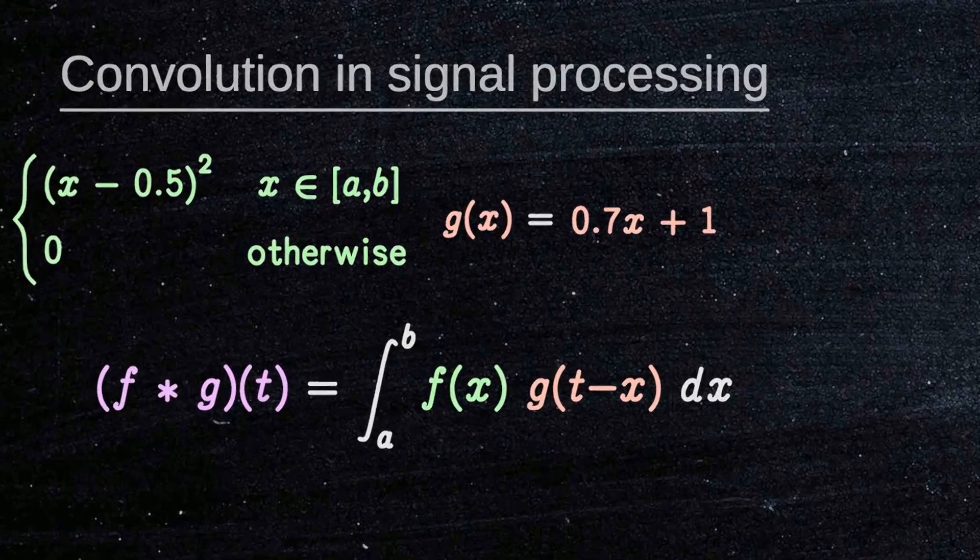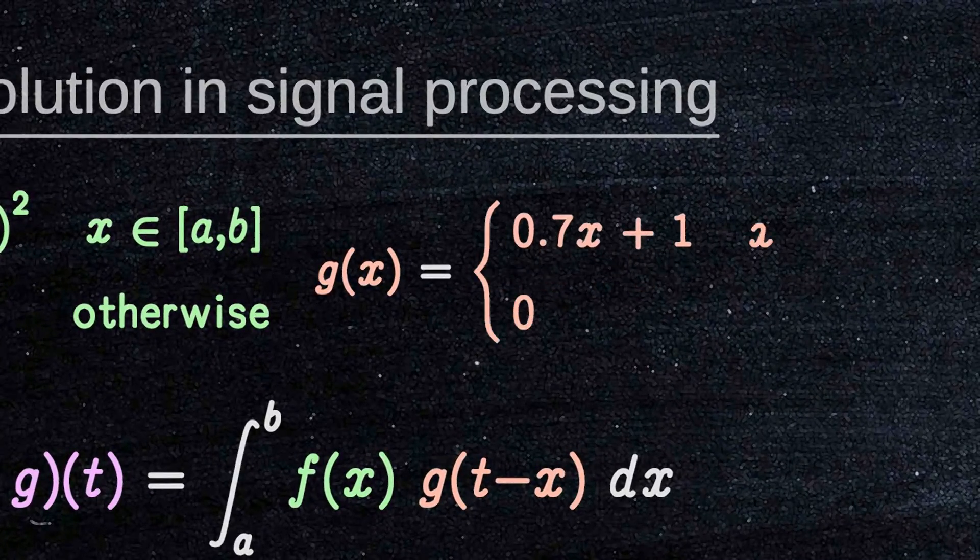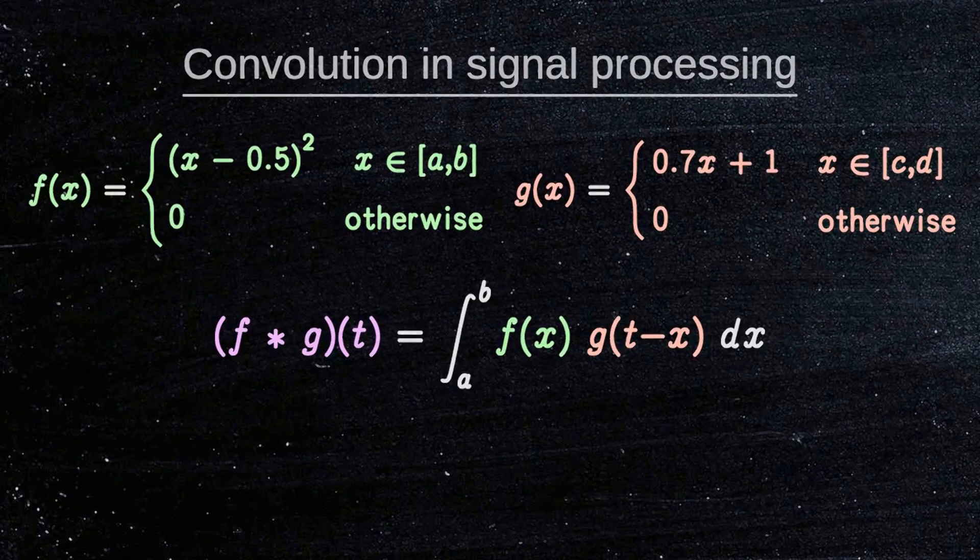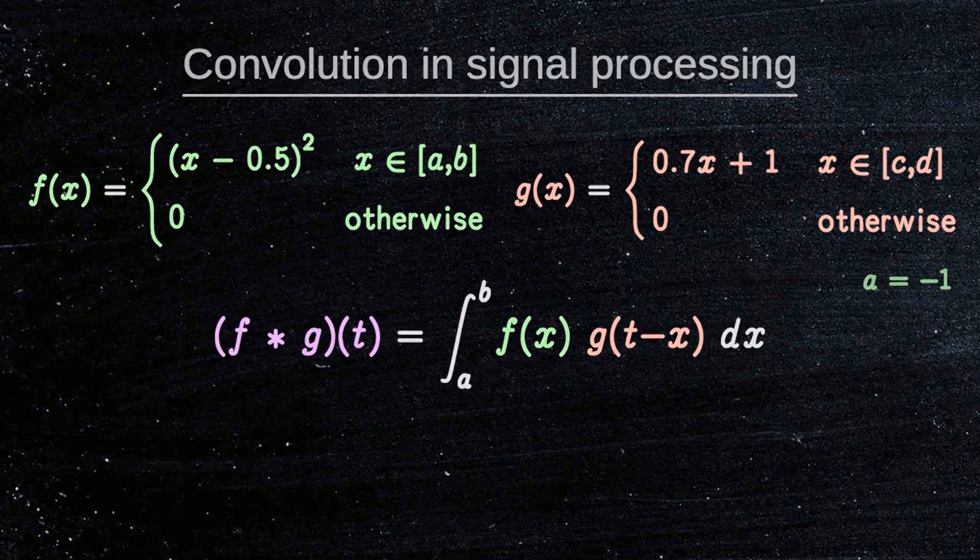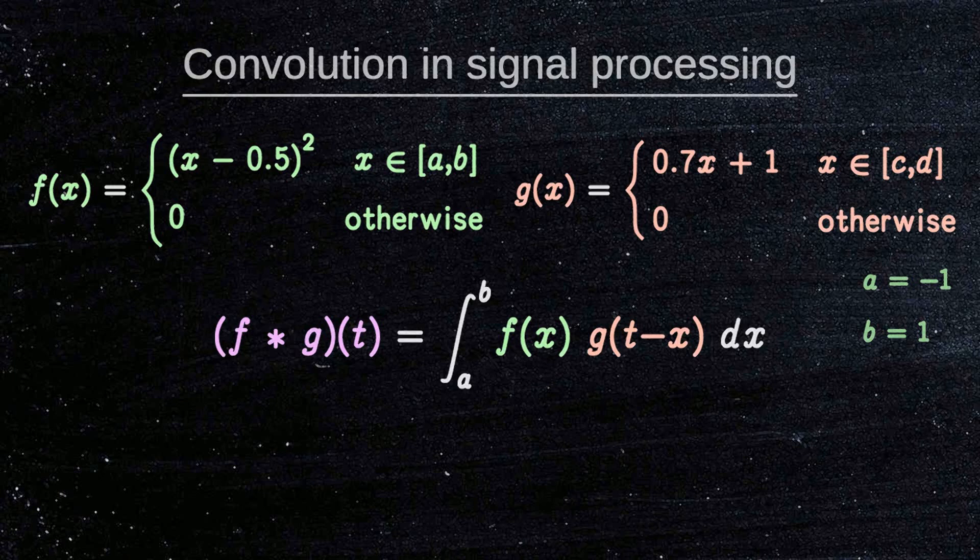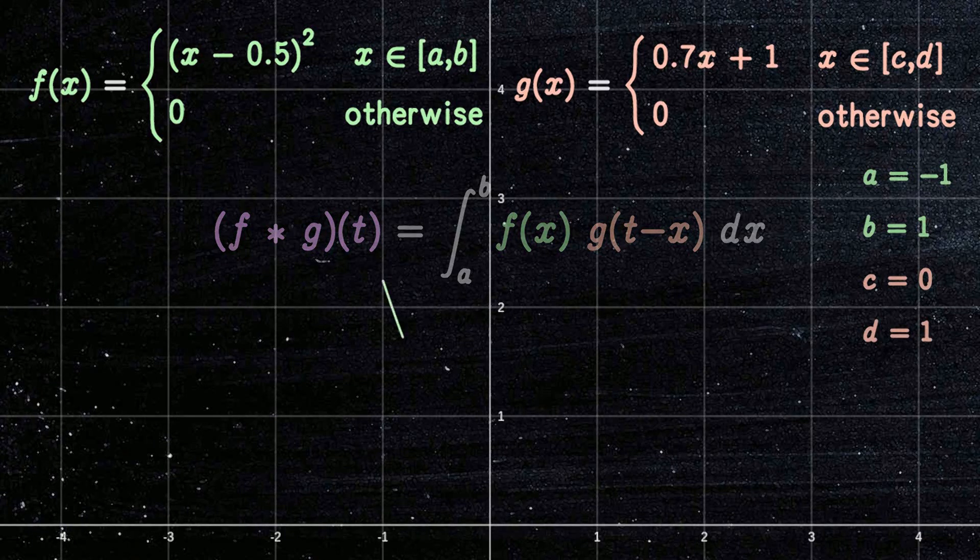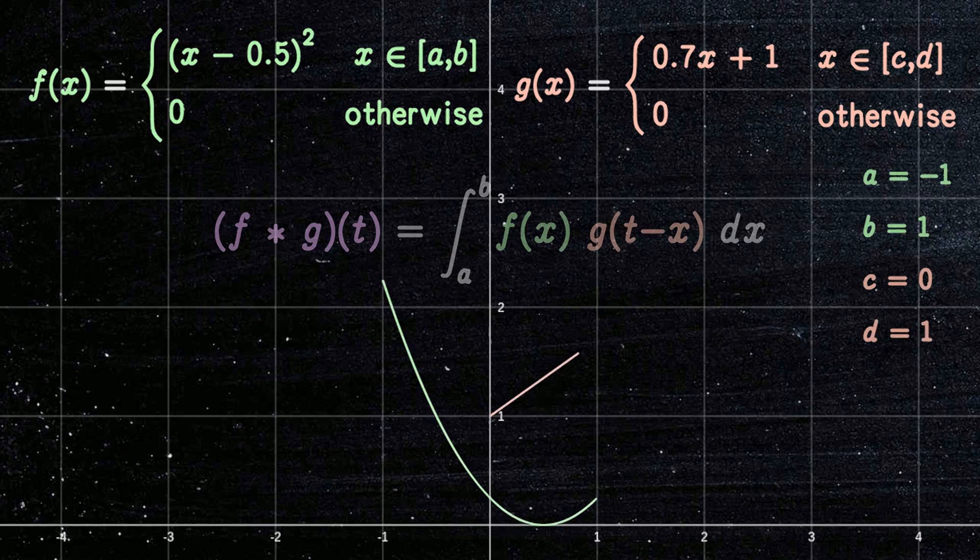The function g is also a finite signal. For this particular example, a is equal to minus one, b is equal to one, c is equal to zero, and d is equal to one. And this is how it looks. Here is the function f. Here is the function g. And here is the convolution of f and g.